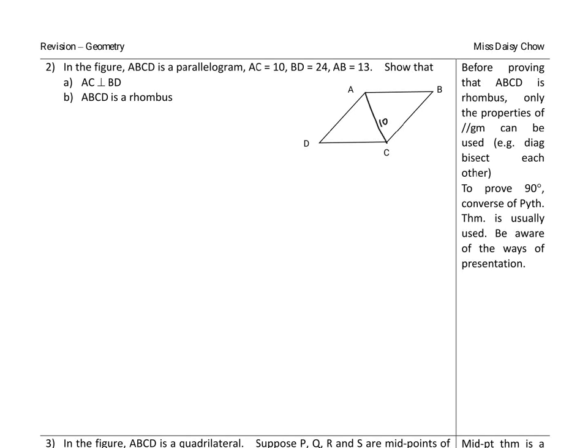In the figure, ABCD is a parallelogram, AC equals 10, BD equals 24, and AB equals 13. Part A, show that AC is perpendicular to BD.